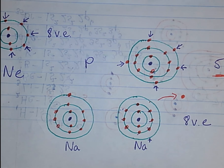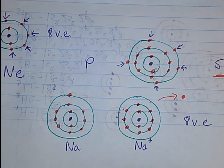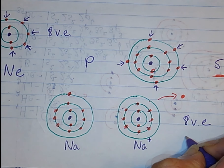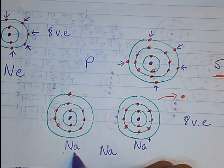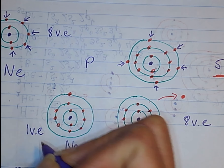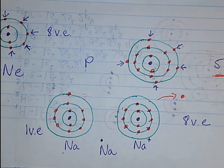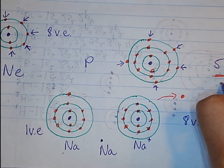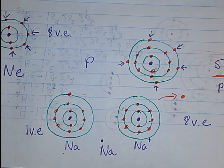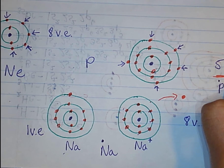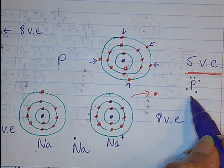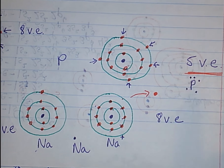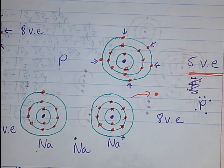When we talk about the Lewis dot structure, we are talking about valence electrons. The Lewis dot structure for sodium in its original atom has one valence electron, so sodium would have only one dot. For phosphorus, the Lewis dot structure shows five valence electrons — five dots total.